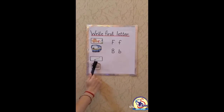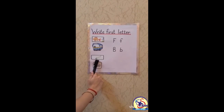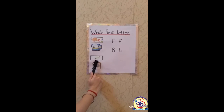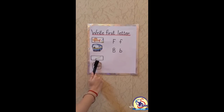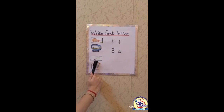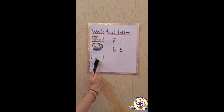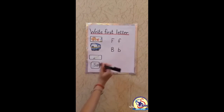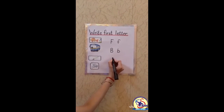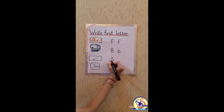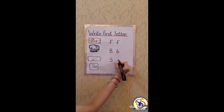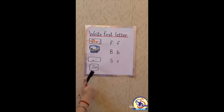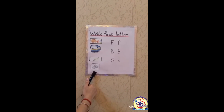Which picture is this? This is a spoon. So when we pronounce spoon, how it sounds? S. Spoon. So which letter sounds? S. Letter S. So we will write capital S and small s.